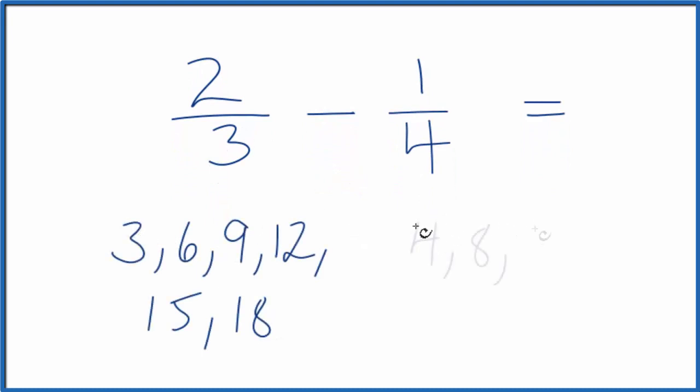And then for 4, and there it is, 12. So 12 is the lowest common multiple for 3 and 4.